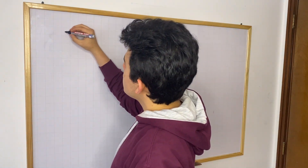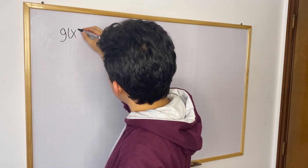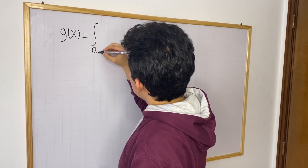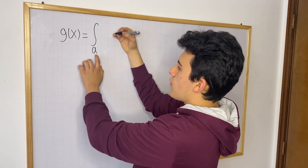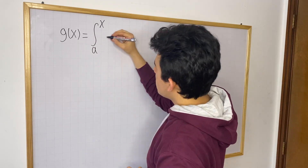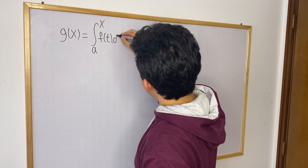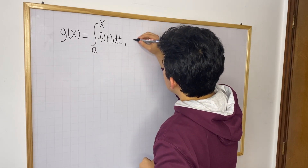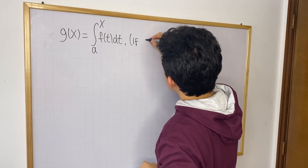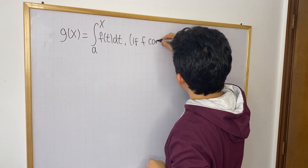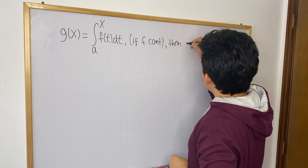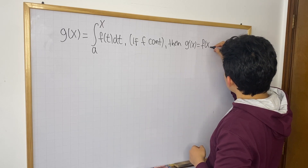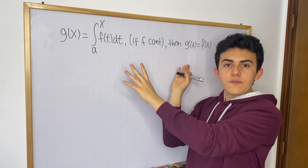The second fundamental theorem of calculus says that if you have any function — I'm going to say we have g of x — and g of x is going to be a very interesting function. It's going to be a function that is basically a definite integral from a, with upper bound x, and it's going to have an integrand of the function f of t, dt. And if we have this function and f is continuous, then g prime of x is going to be equal to f of x. So this is the second fundamental theorem of calculus.